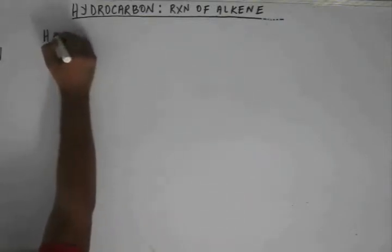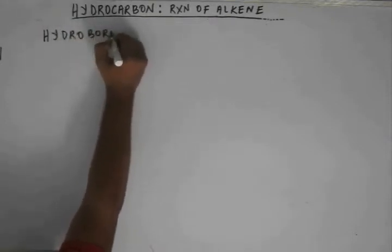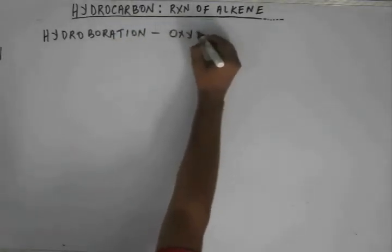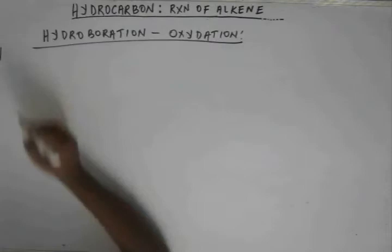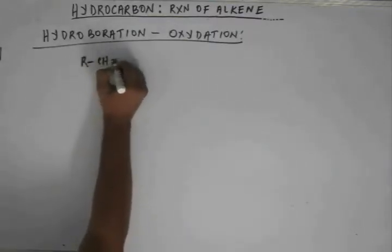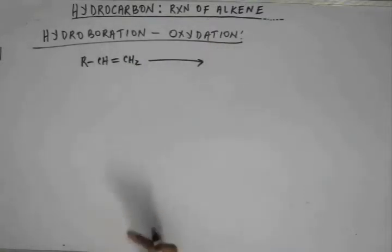The next reaction is Hydroboration-Oxidation. Hydroboration-Oxidation gives us a product using the same kind of alkene as we had for hydration and for the last reaction, oxymercuration-demercuration. We are using the same structure for Hydroboration-Oxidation.